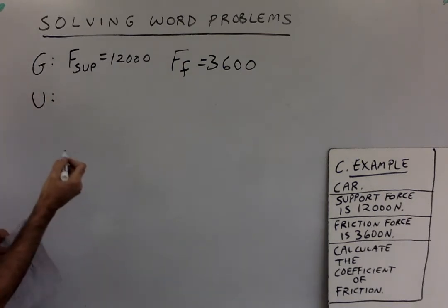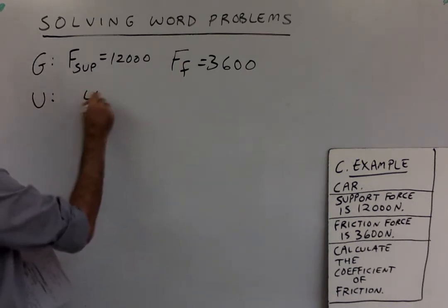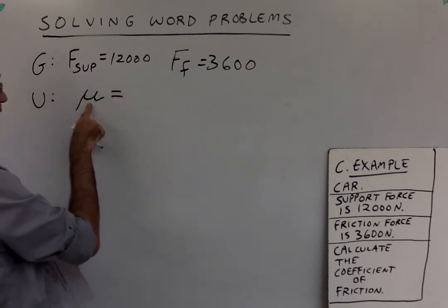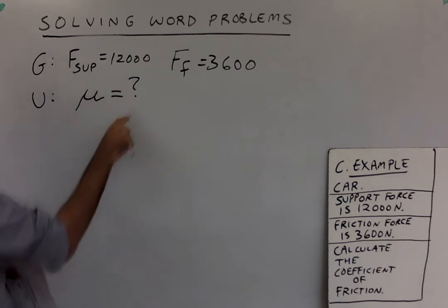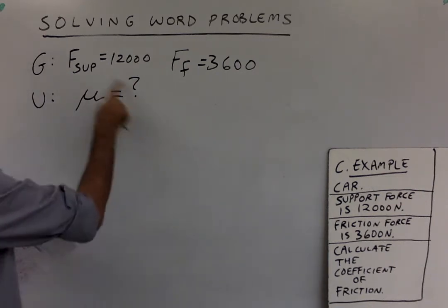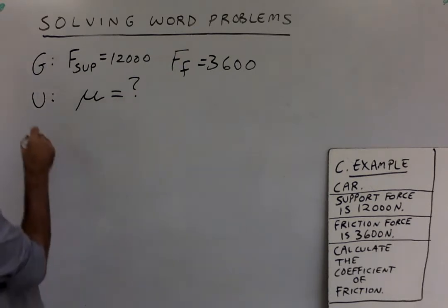Next is U for unknown. That's the thing they want. I'll show you how I write that. They say they want the coefficient of friction, so I write the symbol for it, that mu, the symbol, equals question mark. That way if I am interrupted and I come back, I can instantly see that that's the unknown. That's what they want me to find.